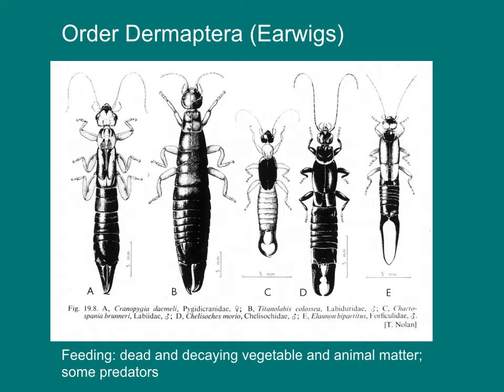Earwigs, the order Dermaptera, have distinct pincers at the tip of their abdomen. Earwigs feed largely on dead and decaying vegetable and animal matter, though some are predators. The pincers are used in defense against predators. These insects are not a threat to humans — they don't climb in your ears, for example.